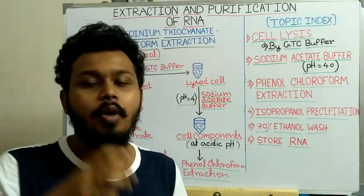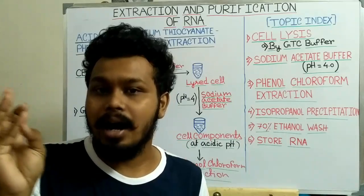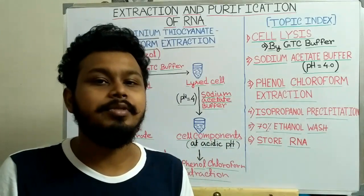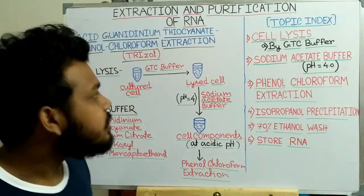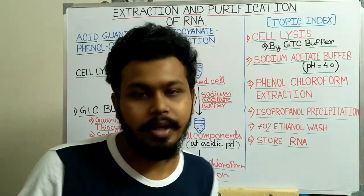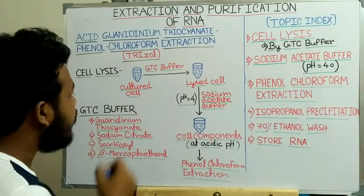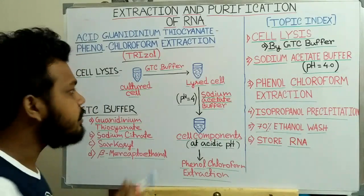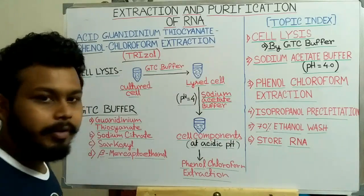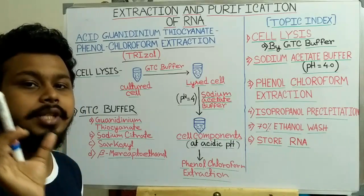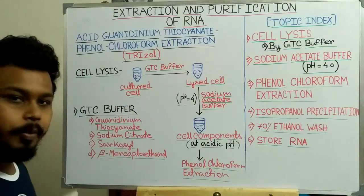To collect all three types of RNA — mRNA, tRNA, and rRNA — we first have to lyse the cell. So the first step is cell lysis. All our cultured cells are present, and we have to lyse these cells using GTC buffer, that is the guanidinium thiocyanate buffer.